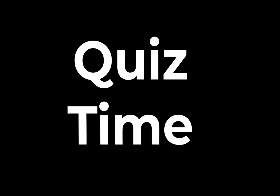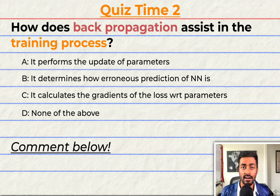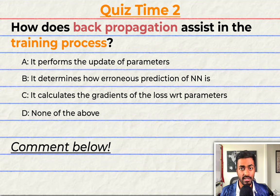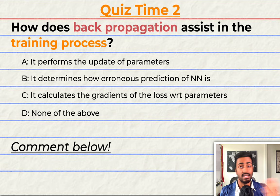Quiz time! Have you been paying attention? Let's quiz you to find out. How does backpropagation assist in the training process? A: It performs the update of parameters. B: It determines how erroneous the predictions of the neural network are. C: It calculates the gradients of the loss with respect to the parameters. D: None of the above. Comment your answer down below and let's have a discussion. That'll do it for quiz time and pass two, but keep paying attention because I will be back.